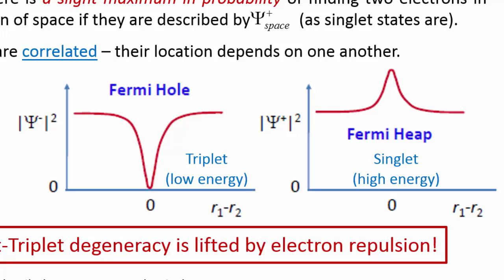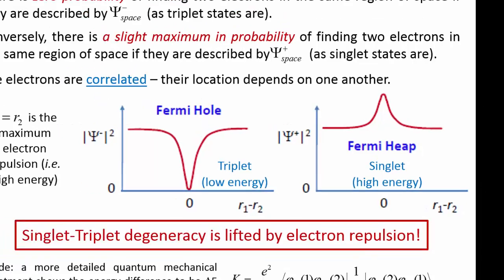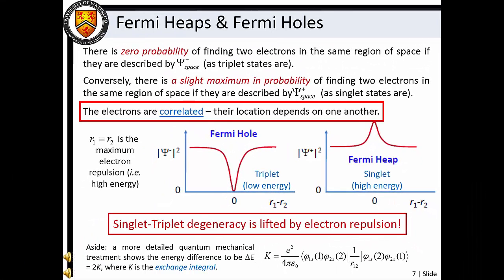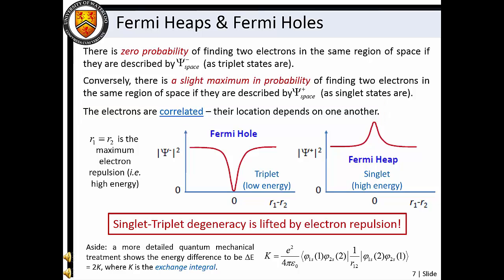Conversely, we find a slight maximum in the probability of finding two electrons in the same region of space if they are described by a symmetric spatial wave function, and this is termed a Fermi heap. In other words, the electrons are correlated — their location depends on one another. For triplet states, the reduced probability of finding two electrons at the same location in space means that the electron-electron repulsion is slightly reduced. Singlet states, on the other hand, exhibit a slightly higher degree of electronic repulsion owing to the Fermi heap. As a result, the triplet state is lowered in energy and the singlet state is raised in energy. We can describe this energy difference quantum mechanically with the exchange integral.